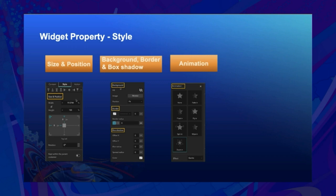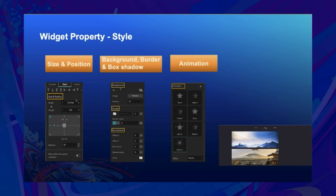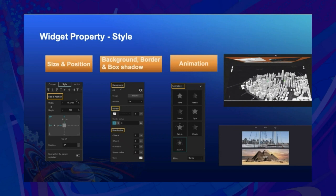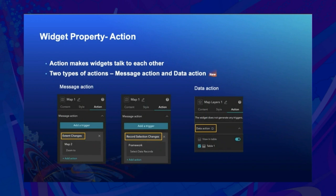Animations are visual effects that occur when a widget appears or is in transition. For example, this 2D and 3D fade-in effect takes place when a view with a 2D map moves to a view with a 3D scene. The action property enables widgets to talk to each other. When Map 1 zooms to an area, Map 2 will zoom to the same area.